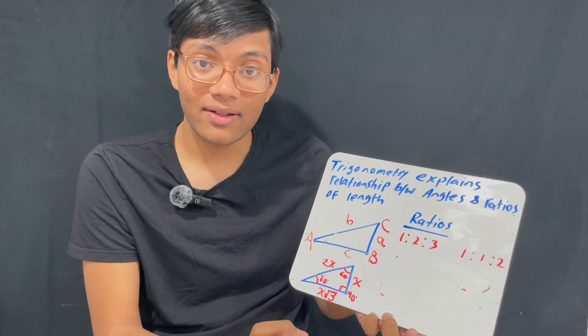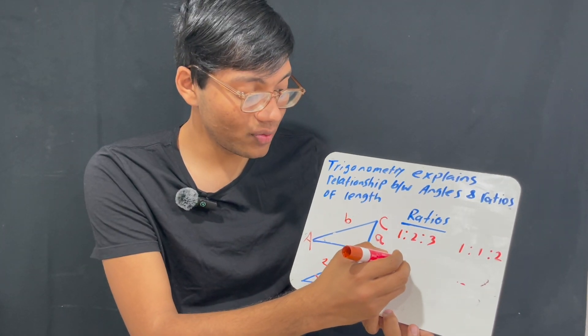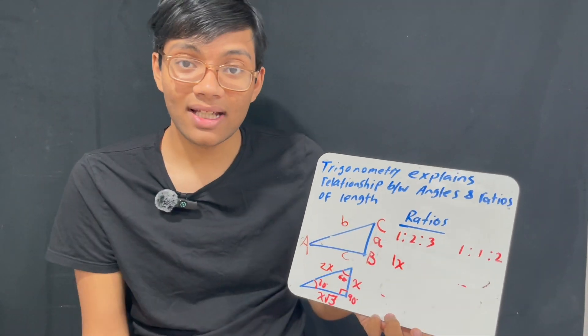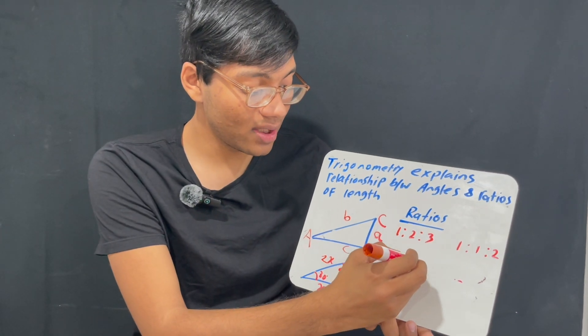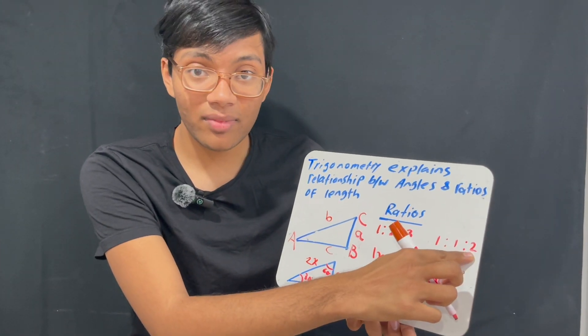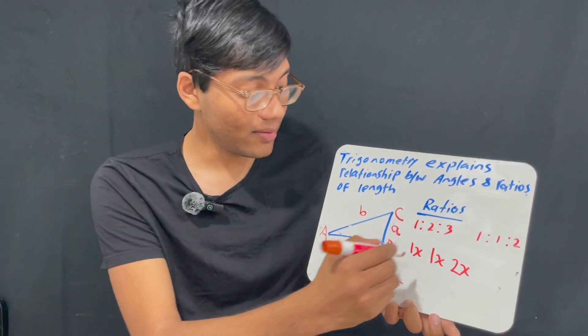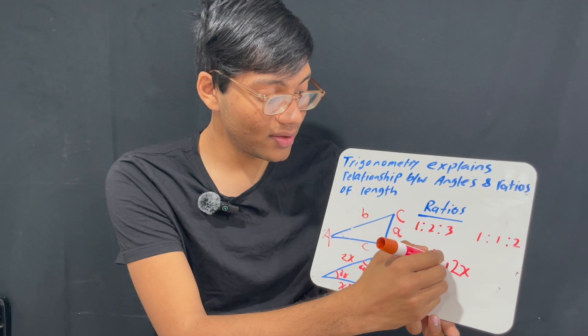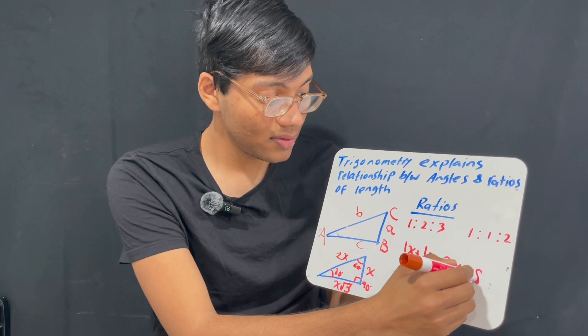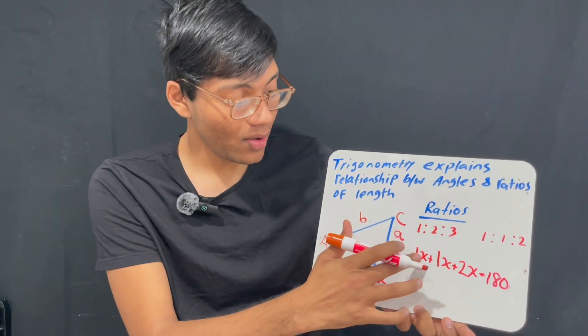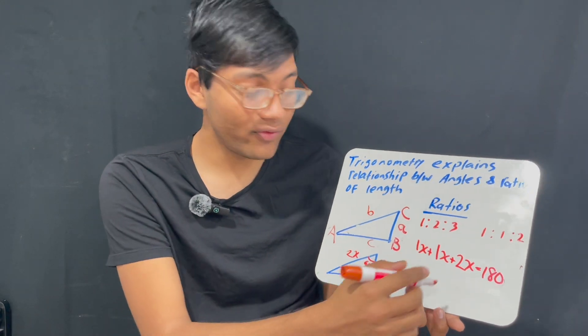So, multiply the first number by x, that gives you 1x. Multiply the second number by x, that gives you 1x. Multiply the third number by x, that gives you 2x. If I add these up, it should give me 180 degrees. Now, I just add these up. 1 plus 1 is 2, plus 2 is 4.